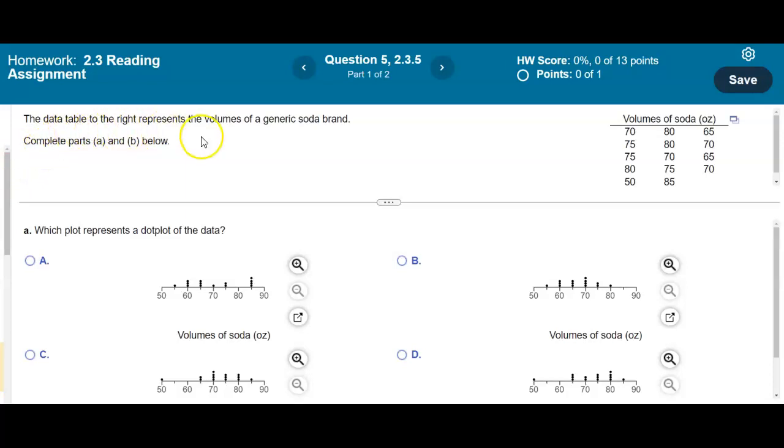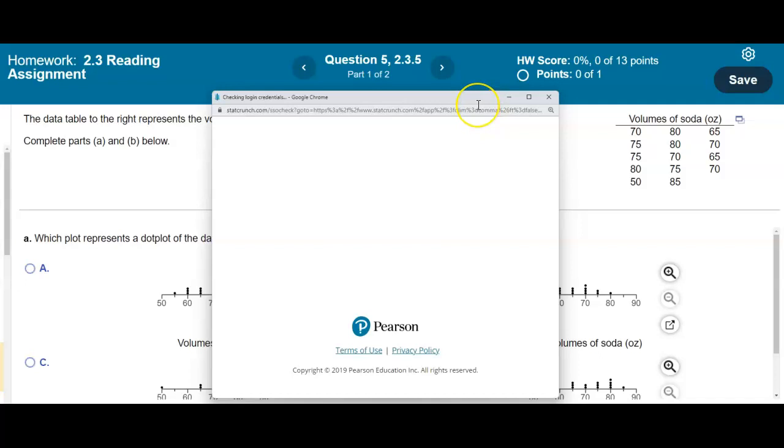The data table to the right represents the volumes of a generic soda brand. We want to complete parts A and B below. So the question is asking us which plot represents a dot plot of the data. So if you look over here to the right, we're going to go ahead and click on open into StatCrunch. So we're going to open this up into StatCrunch.